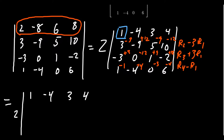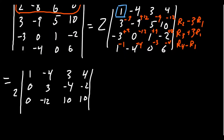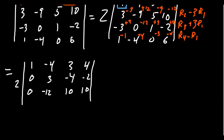Simplifying: the second row gives 0, 3, −4, −2; the third row gives 0, −12, 10, 10; and the last row gives 0, 0, −3, 2.